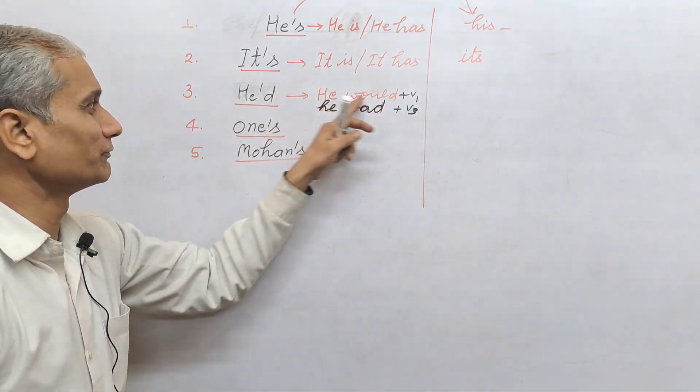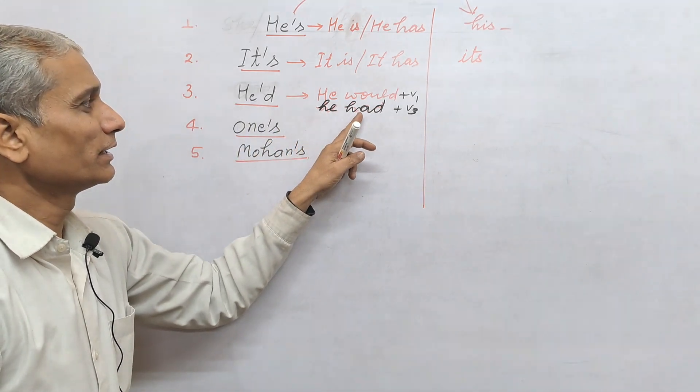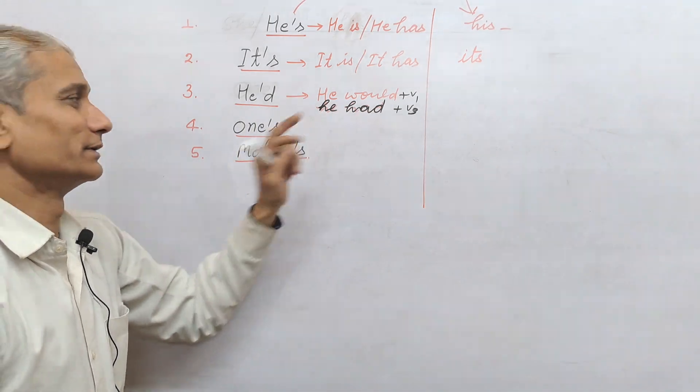Means first form ati hai to he'd means he would. And third form ati hai yahan pe, so that means he had will be considered.